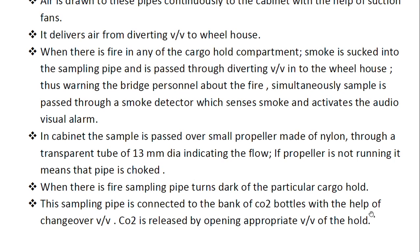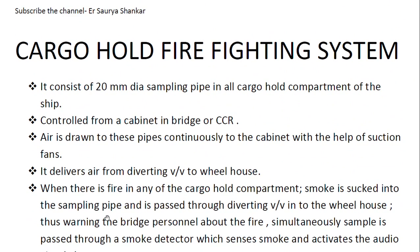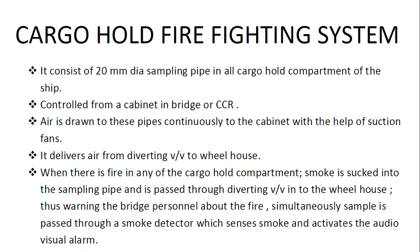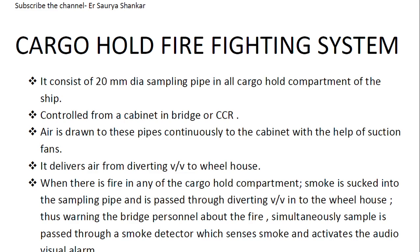This sampling pipe is connected to the bank of CO2 bottles via a change-over valve. CO2 is released by opening the appropriate valve for that hold. With the change-over valve, the CO2 bottle is operated to discharge CO2 into the particular cargo hold. In summary: for cargo hold firefighting we have a fixed CO2 system, smoke detectors, a 20 mm sampling pipe continuously drawing samples to the bridge, a nylon propeller and transparent tube in the cabinet, and with the change-over valve CO2 can be discharged into the affected cargo hold.